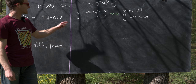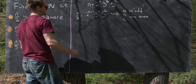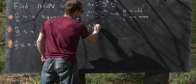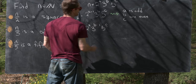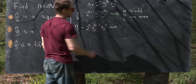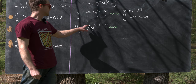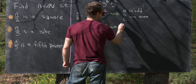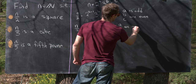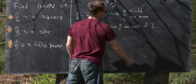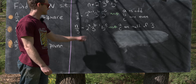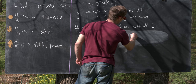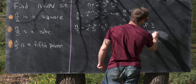Now let's play that game with n over three. We've got n over three equals two to the a, times three to the b minus one, times five to the c, and we want that to be a perfect cube. So each of these exponents must be a multiple of three. That means a and c are multiples of three, and b minus one has to be a multiple of three, which means b is one more than a multiple of three. We can write b as three k plus one for some natural number k.